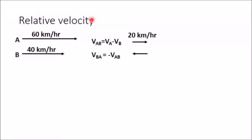Relative velocity. Relative velocity between two objects is obtained by subtracting the velocity of one object from the velocity of the other object.